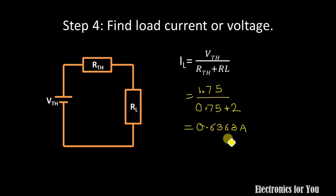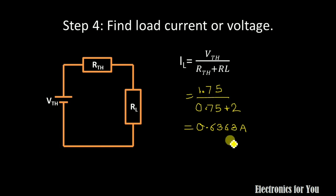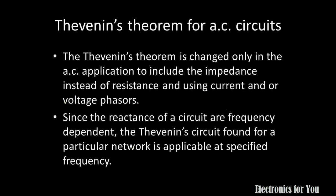Solving this, we get IL equal to 0.6363 ampere. This is the current flowing through the 2 ohm resistance. We can verify this by applying KVL or Maxwell's loop method to the original circuit, and it will also give the same answer of 0.6363 ampere.